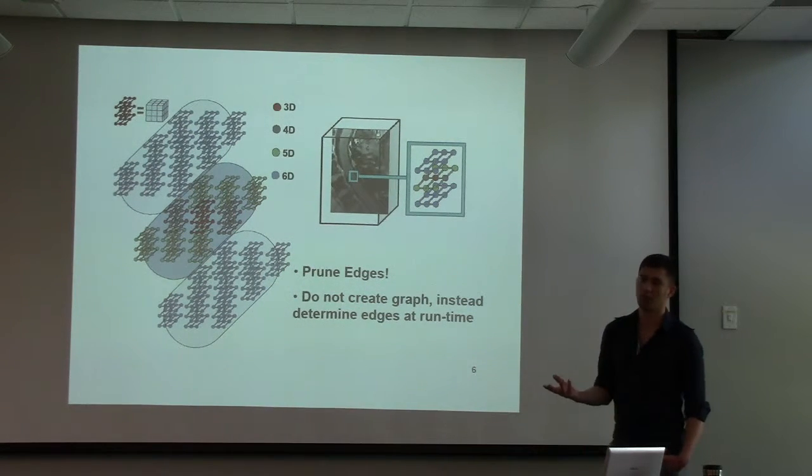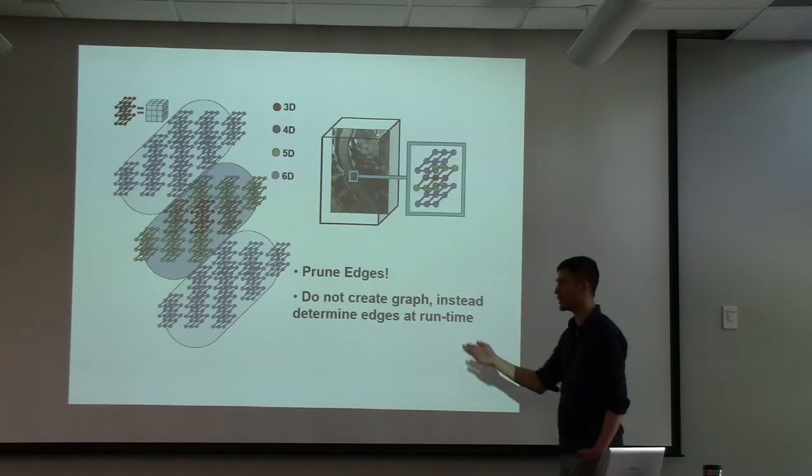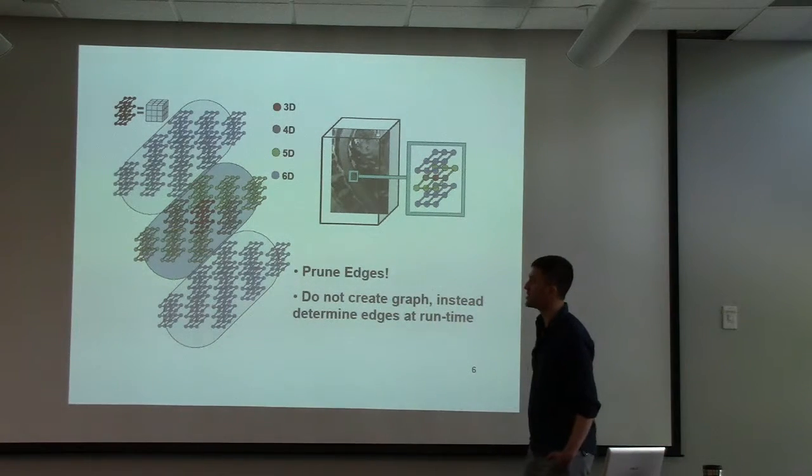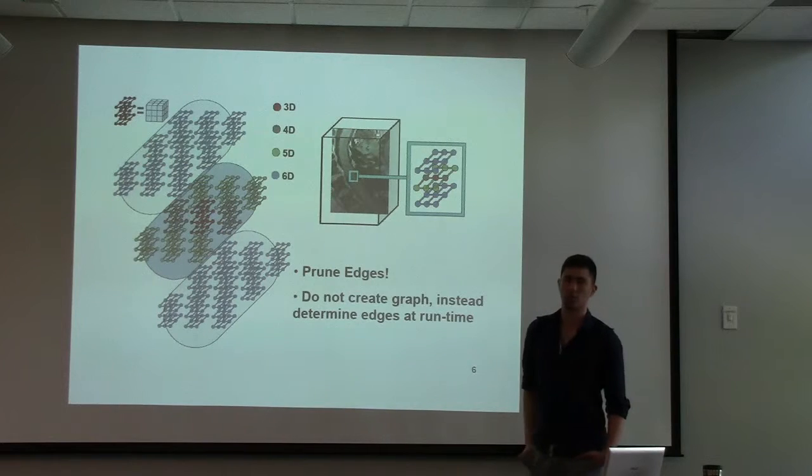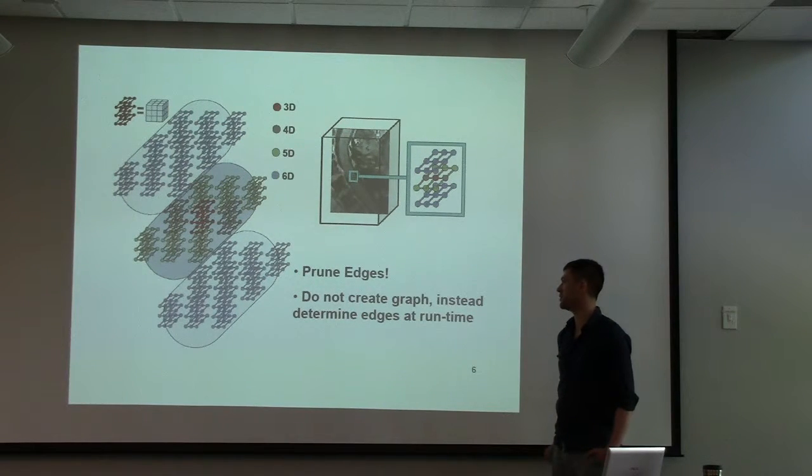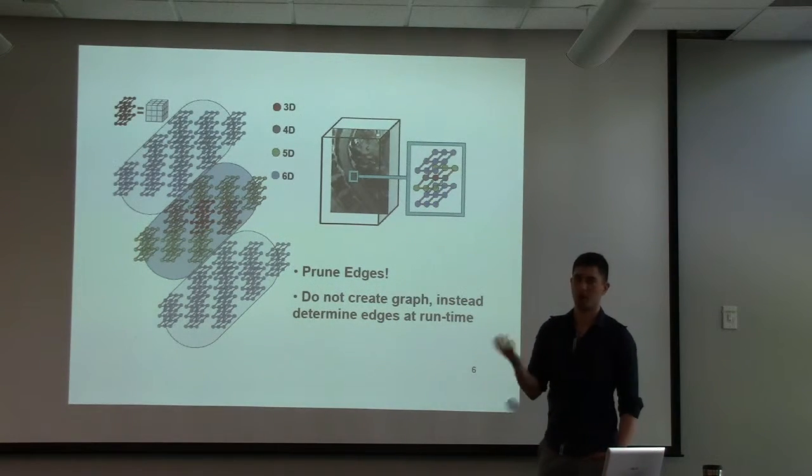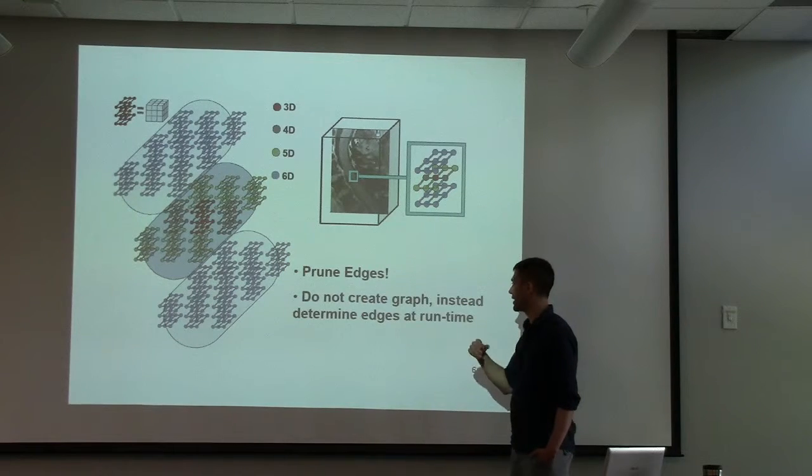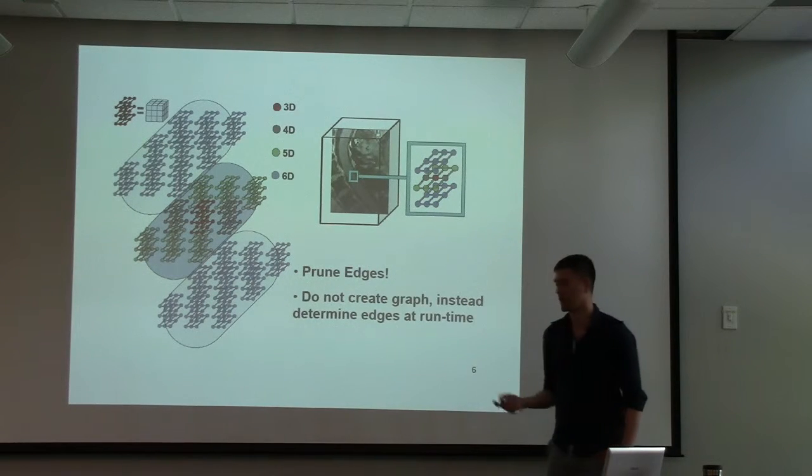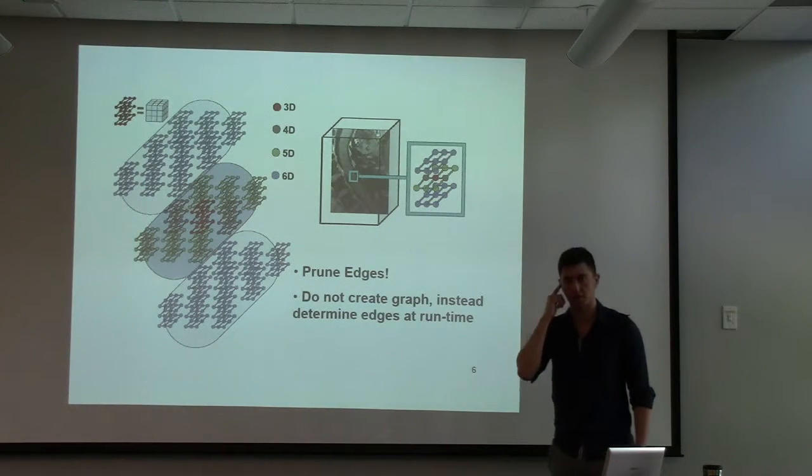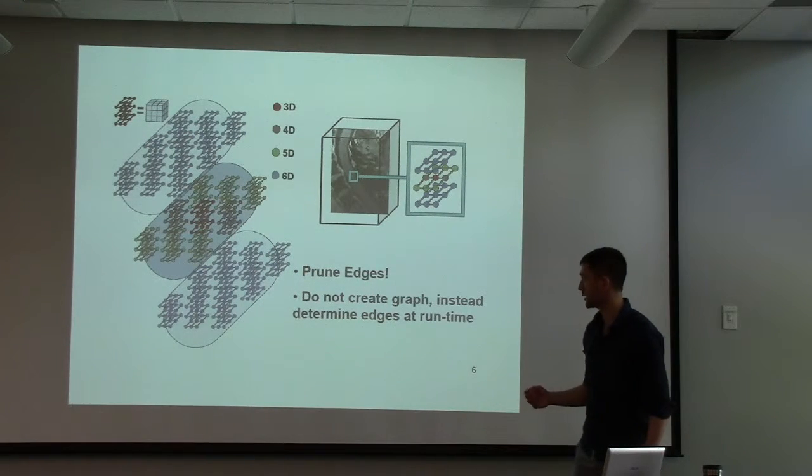So we had two insights that helped with that. One is that we can massively prune a lot of the edges in this graph. A lot of the paths don't really make sense. Second is that we don't actually have to create the graph with all the edges prior to runtime. We can actually infer the edges at runtime and that will drastically drop the memory from over 100 gigabytes to 10 gigabytes.